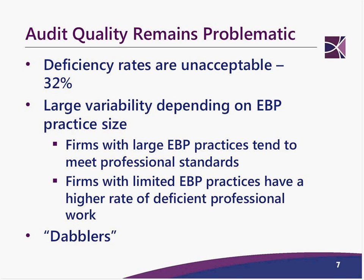There's a large variability depending on employee benefit practice size. Firms with large practices — defined as those with 25 plans or greater — tend to meet the standards. Firms with limited practices have a much higher rate of deficiency, and those called 'dabblers' — audit firms with maybe one or two plans — really aren't necessarily familiar with the rules, and the delinquency rate is extremely high.